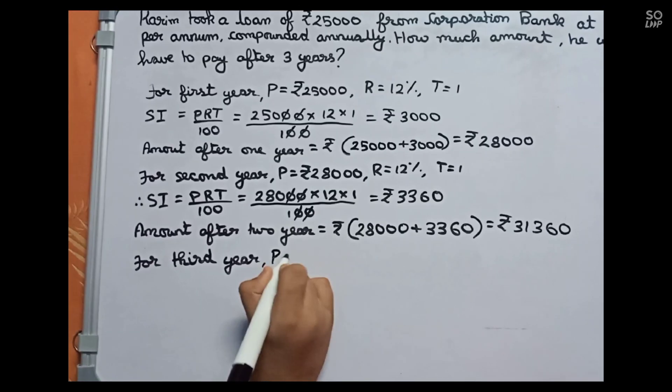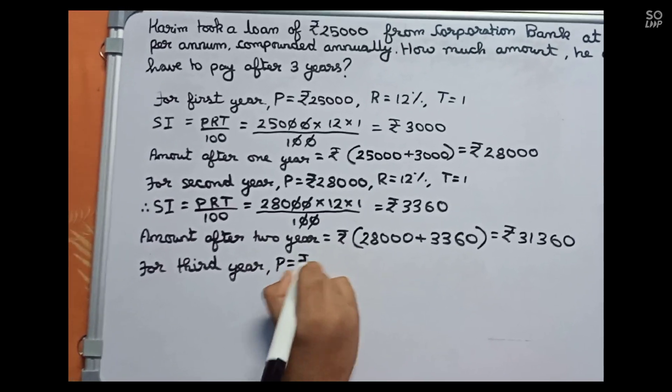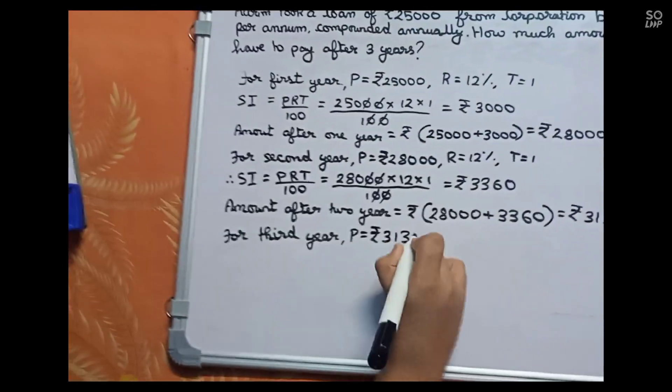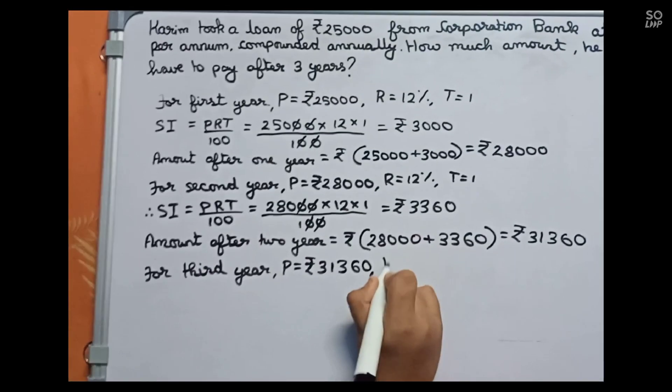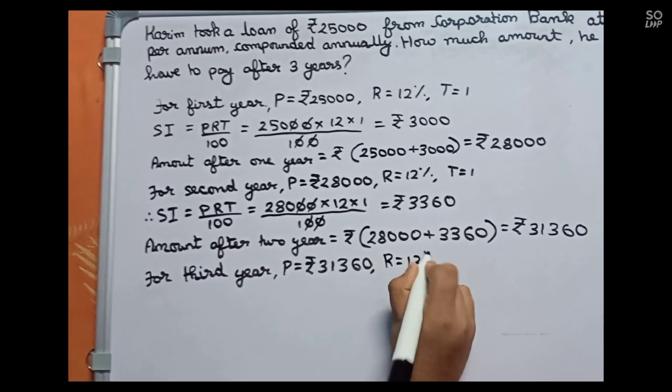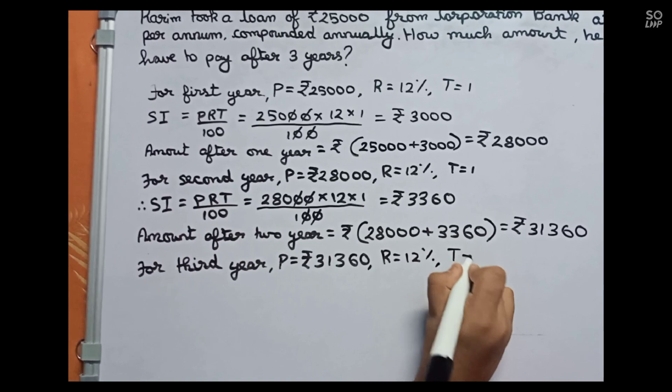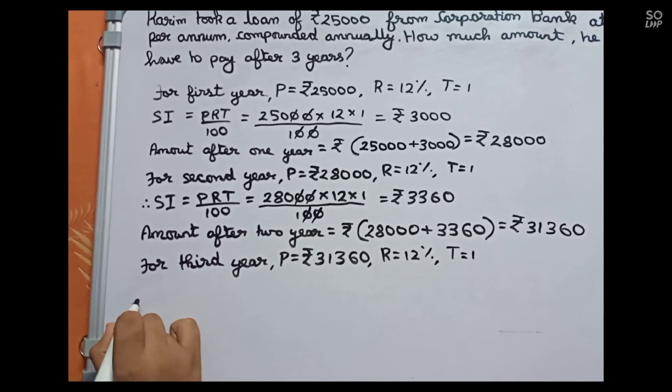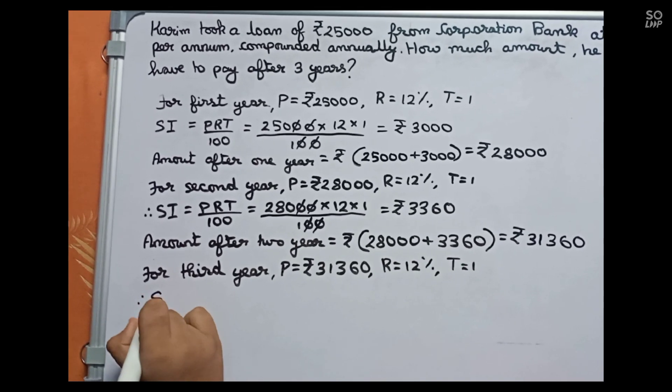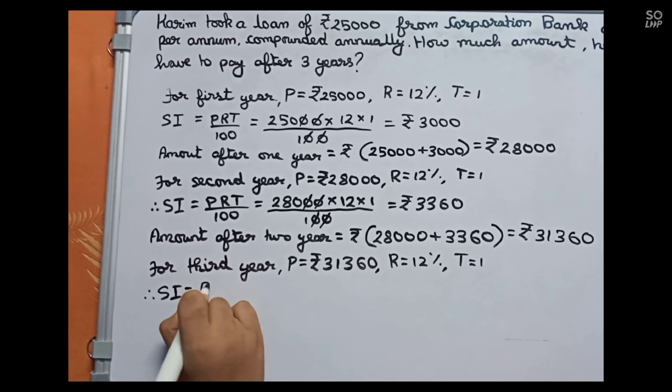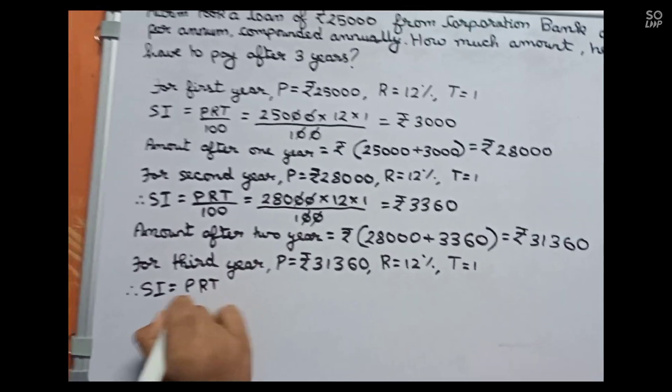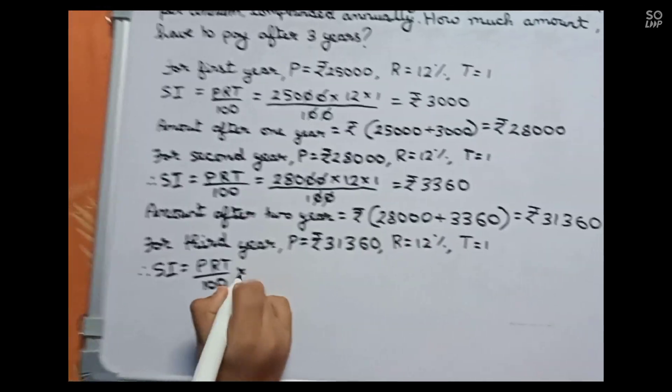Third year: principal equals to rupees 31,360, rate equals to 12%, time equals to one year. Therefore SI equals to PRT by 100.